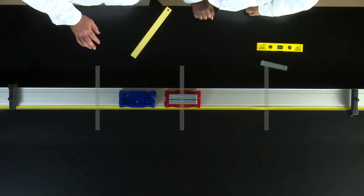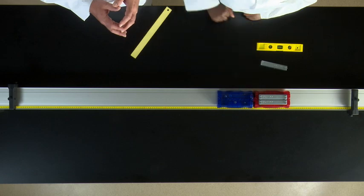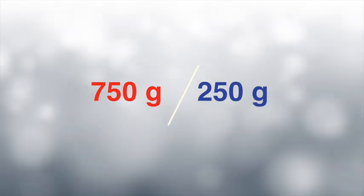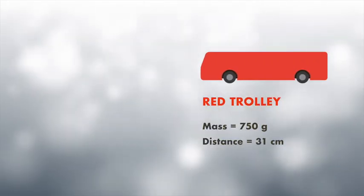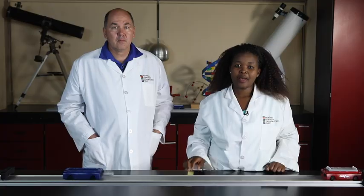Position the two trolleys at one quarter of the length of the track, with the red trolley having the least distance to travel. The mass of the red trolley is 750 grams and that of the blue is 250 grams. The distance of the red trolley from its stopper is 51 centimeters and the distance of the blue trolley from its stopper is 93 centimeters. Release the trolleys and listen — they hit the stoppers simultaneously at exactly the same time.